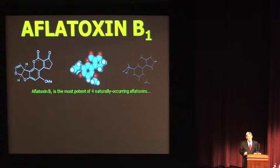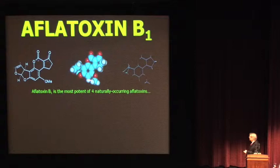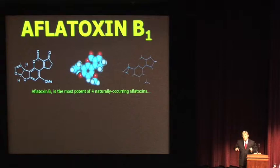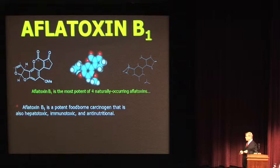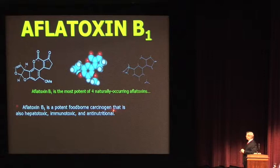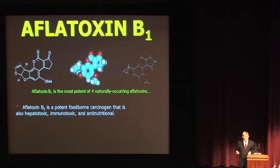Now, probably the most studied, if not the most prevalent, mycotoxin we're talking about is aflatoxin. This is aflatoxin B1 — three ways to represent it: the conventional structural formula, the energy-minimized structure, and a stick model. Aflatoxin B1 is the most potent naturally occurring aflatoxin. It's found in corn and peanuts, and it's ubiquitous in almost everything. It's a really major toxin and carcinogen — one of the most potent carcinogens known. It's in your milk and in your filter, your ice cream and its metabolite. B1 is a potent foodborne cancer-causing agent; it's also hepatotoxic, meaning it affects the liver. It affects the immune system and, importantly, it causes problems with nutrition — anti-nutrition.